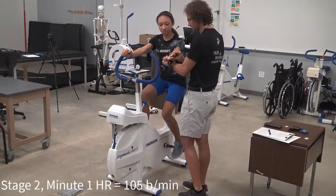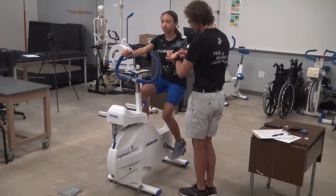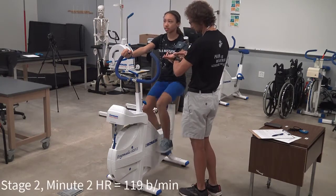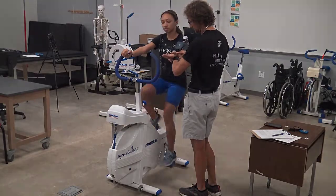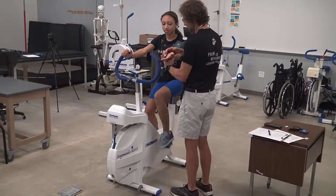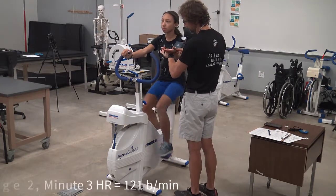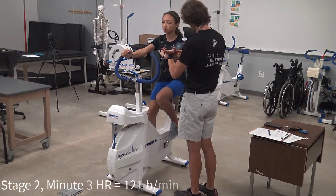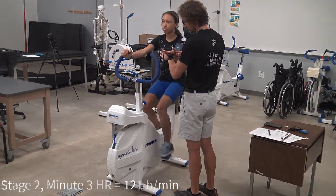We move forward to measuring heart rate at minute one of the second stage, which we'll say is 105 beats per minute, and then again at minute two of the second stage, which we'll say is 119 beats per minute. We now transition to minute three and our heart rate is 121 beats per minute. Since this is within the five-beat range of the minute two heart rate of 119 beats per minute, we consider this steady state.